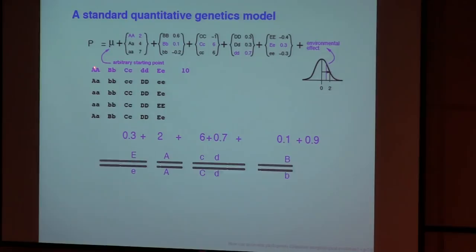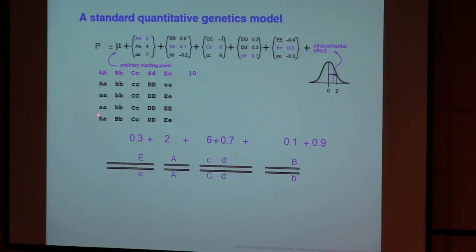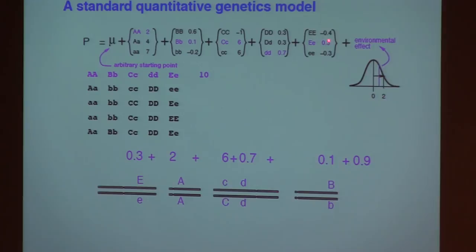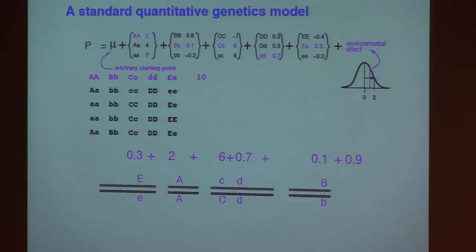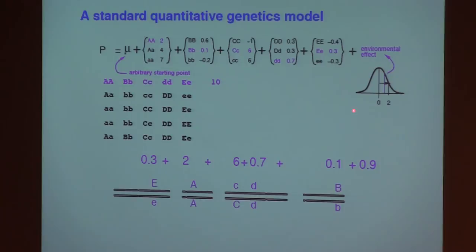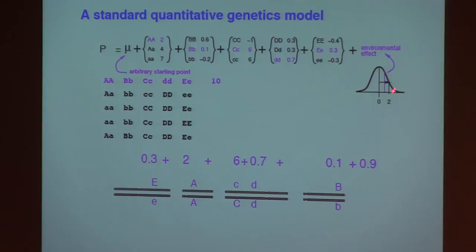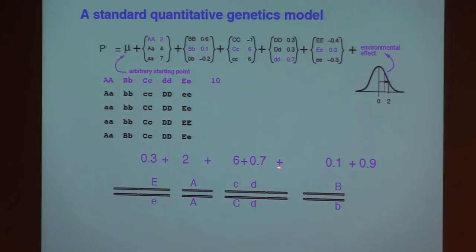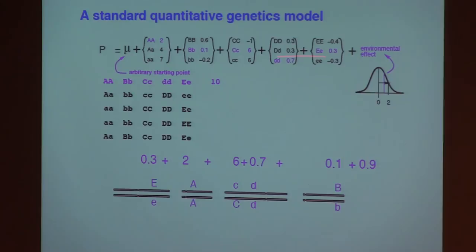And then for any genotype, for example this genotype here, you can read off the numbers and say we start with a starting point, and add two and add 0.1 and add six and add 0.7 and add 0.3. And then you add an independent environmental effect. The simple model makes the assumption that the environmental effect is independent, which of course is not really true. And independent in different individuals, which is not really true either. And you draw from a distribution such as a normal distribution with a known variance, you draw an effect and it gets added on. So we might have this sum as the phenotype of that individual.